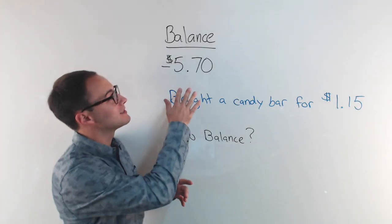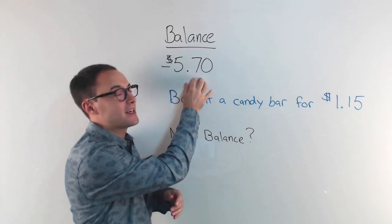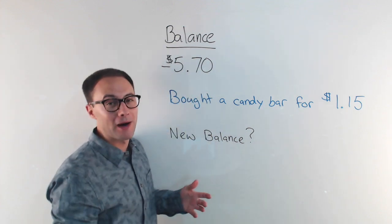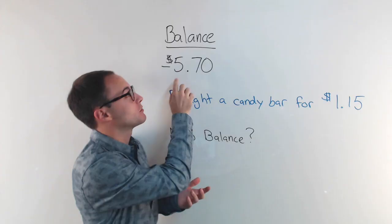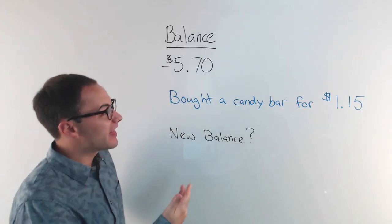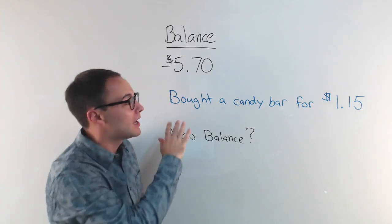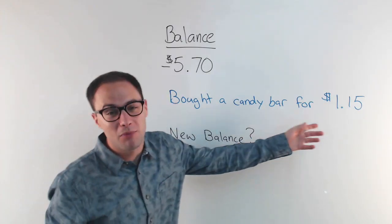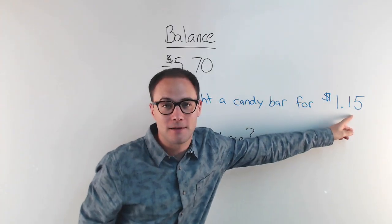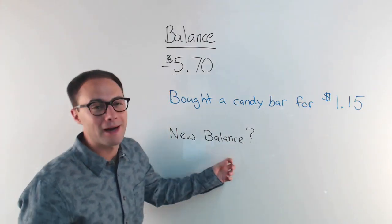So my account balance was negative $5.70. I'm spending more money than I actually had in this case, which is why it's negative. And then maybe I didn't know I overdrew, and I just went and bought a candy bar like normal for $1.15. So the question is, what is my new balance?